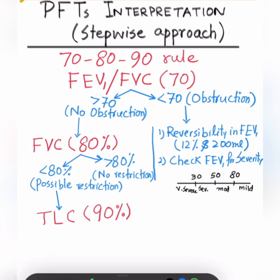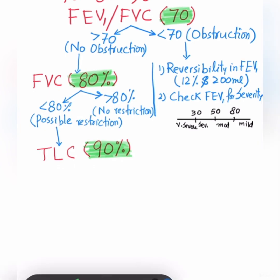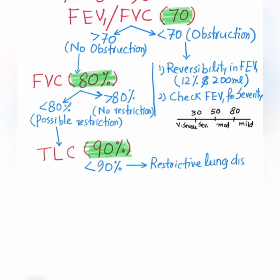So you can see the 70, 80, and 90 rule. The same principle applies to total lung capacity: if the patient has restrictive lung disease, they don't tend to retain volumes. If they are retaining volumes, it rules out restrictive lung disease. If TLC is less than 90%, the patient likely has restrictive lung disease. If TLC is more than 90%, the patient is retaining volume and it cannot be restriction — it rules out restrictive lung disease.